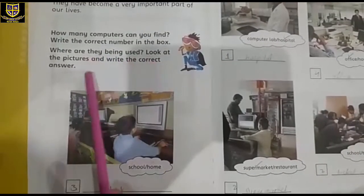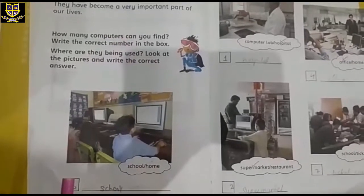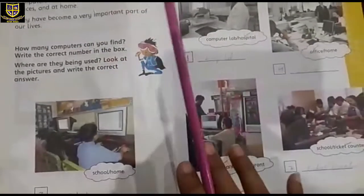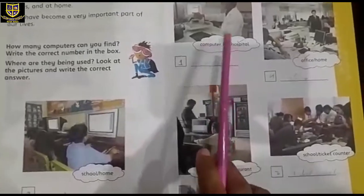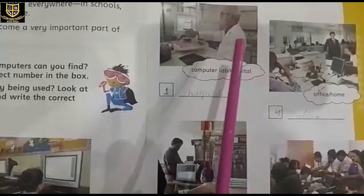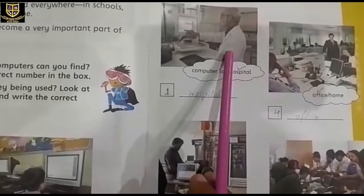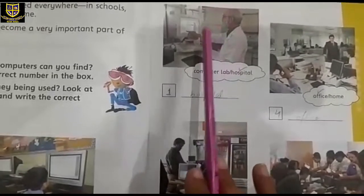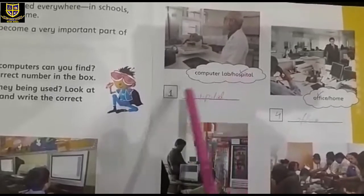Now move to page number nine. We have some more questions here. Computer lab or hospital? See, first of all just keep a watch on this man — he's wearing an overall, so it means he's a doctor. That's why we can easily judge that it is a hospital. Put a tick on hospital and write 'hospital' in the blank.